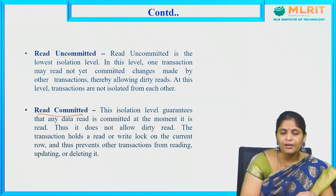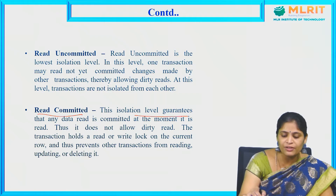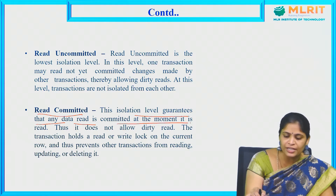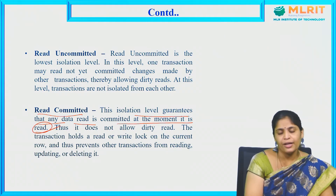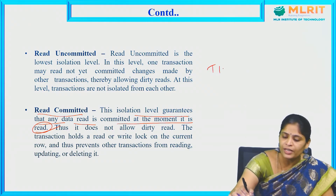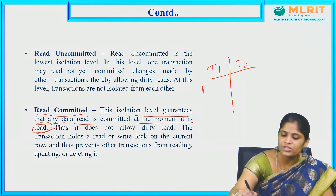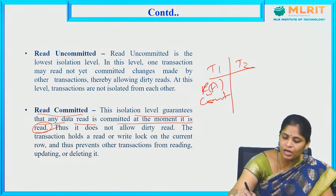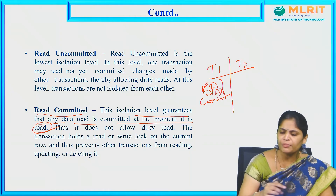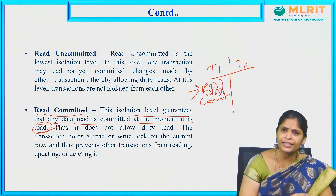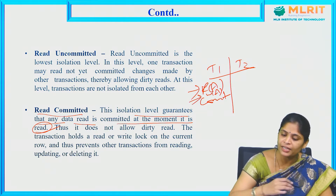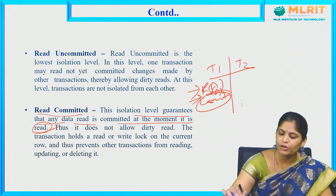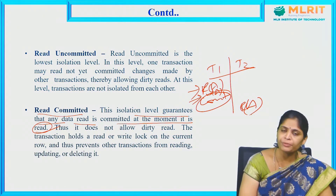Read Committed is the next isolation level. This isolation level guarantees that any data read is committed at the moment it is read. For example, with T1 and T2, T1 performs R of A, then W of A — reading the data item and updating it — and then commits. After committing only, T2 is able to read this data.